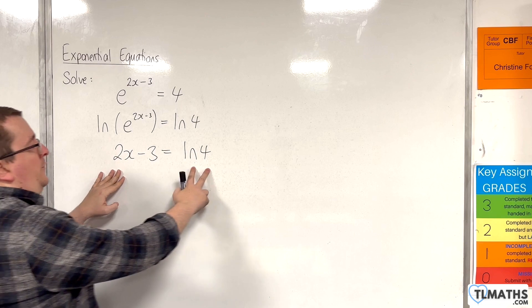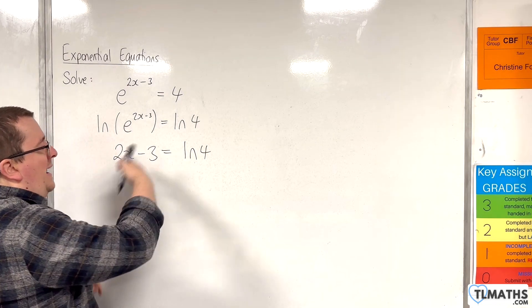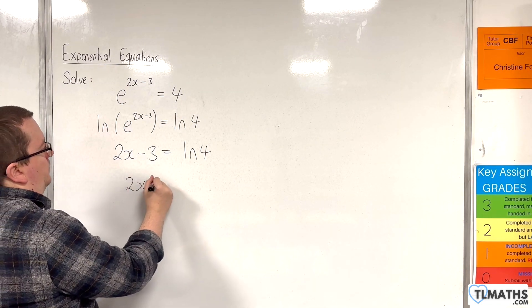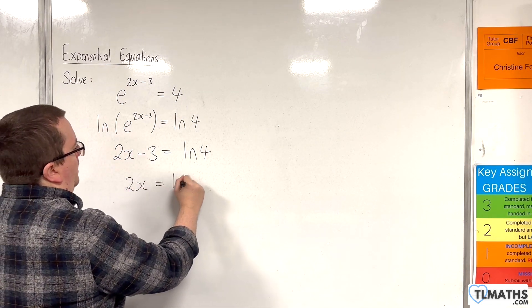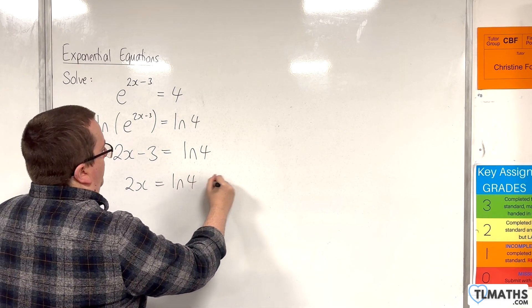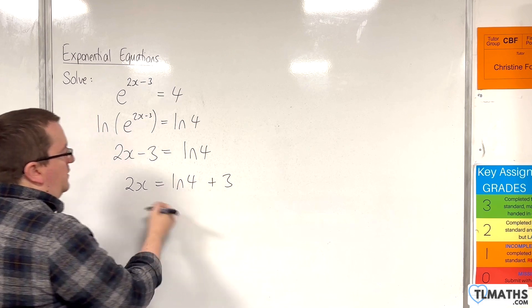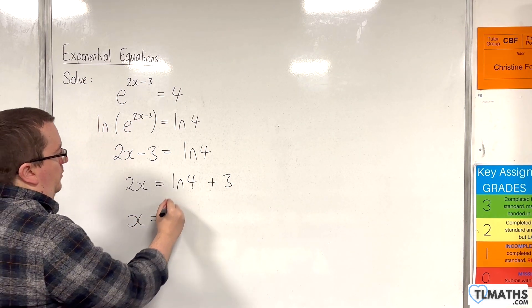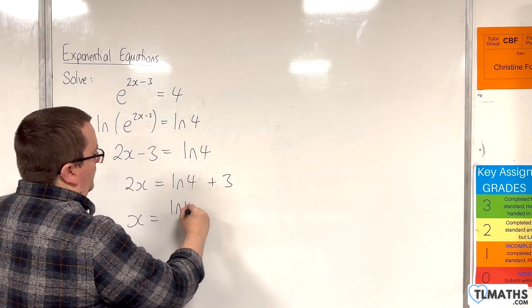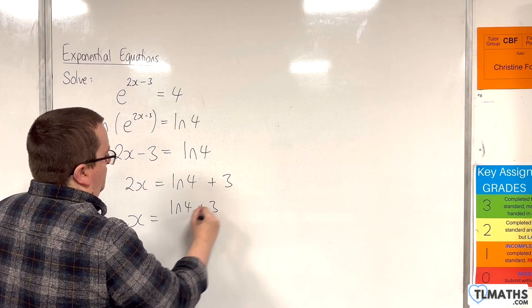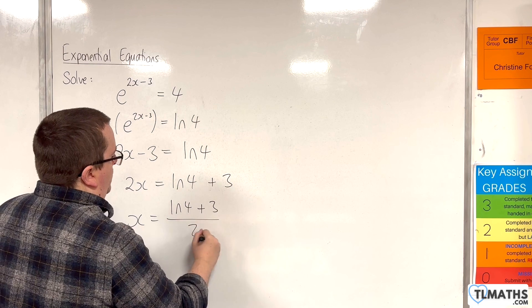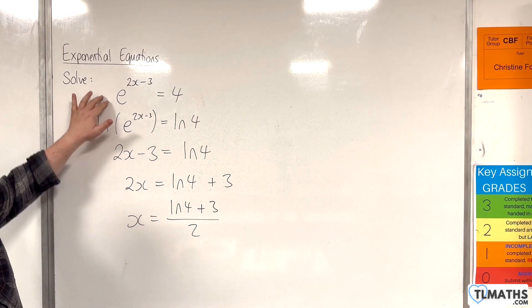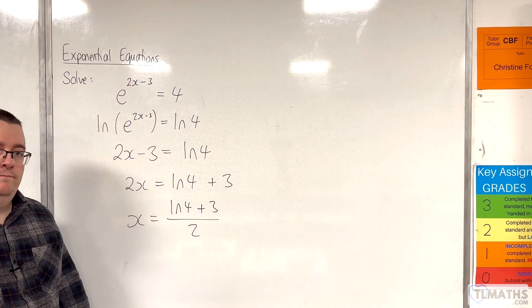So when we are at that stage we can then add 3 to both sides, and then divide through by 2. And so there is the exact solution to the original equation.